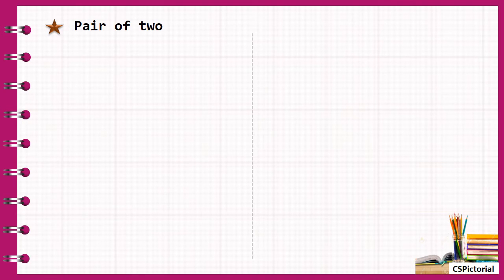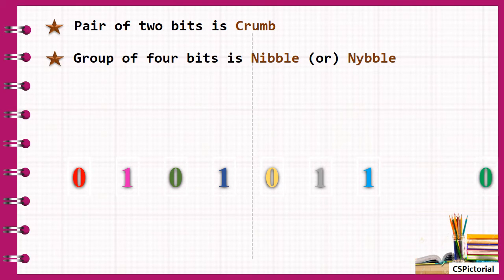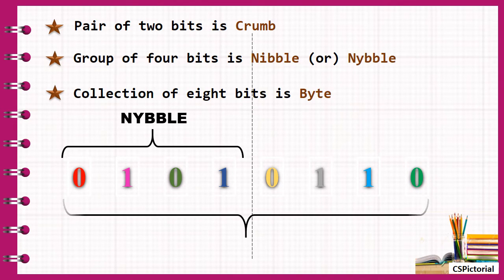The basic unit of data is a bit. A bit is a 0 or a 1. Pair of 2 bits is the crumb. Group of 4 bits is a nibble. Collection of 8 bits is a byte.